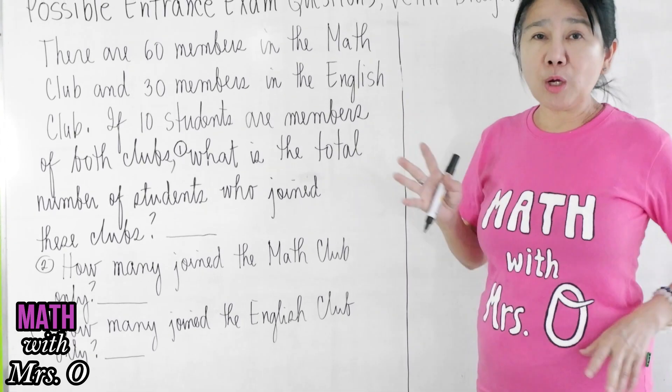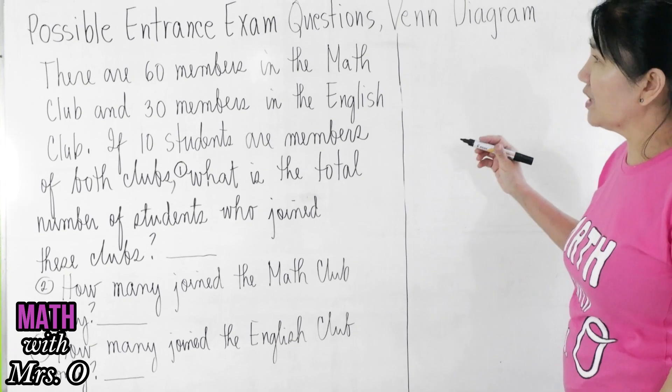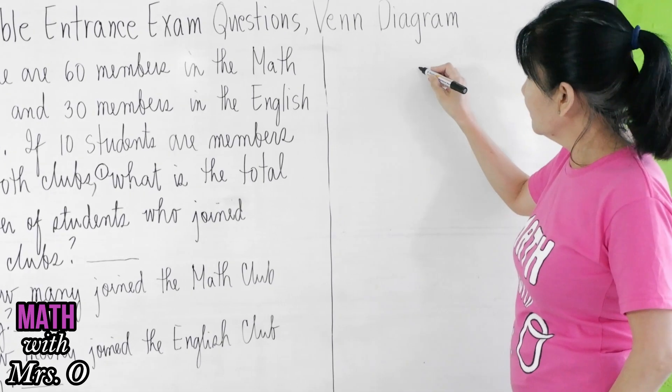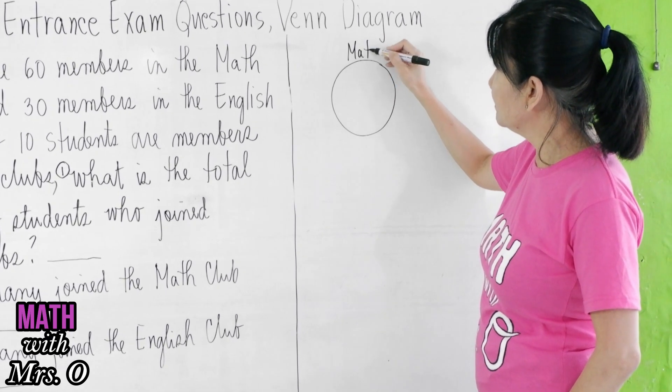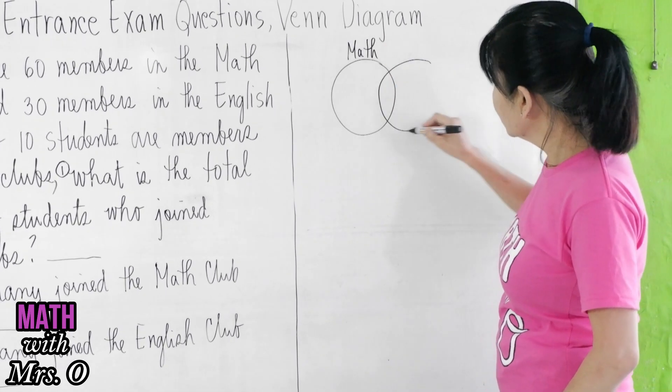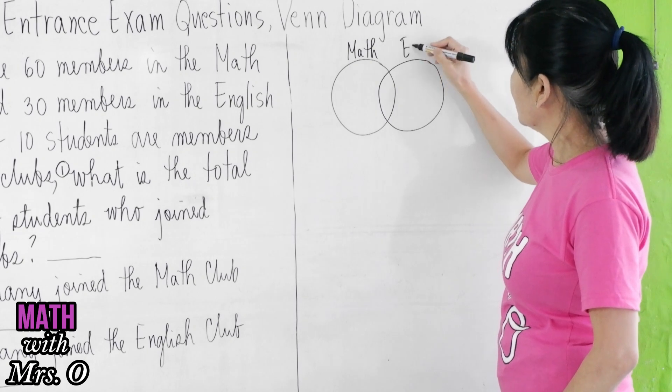In this kind of problem, the fastest way for you to use Venn diagram. You have the first circle for the math club and another circle for the English club.